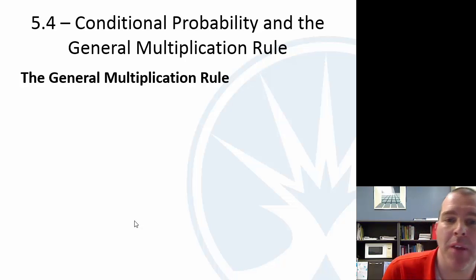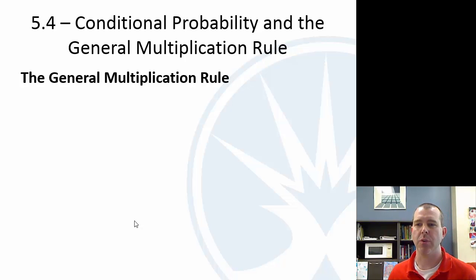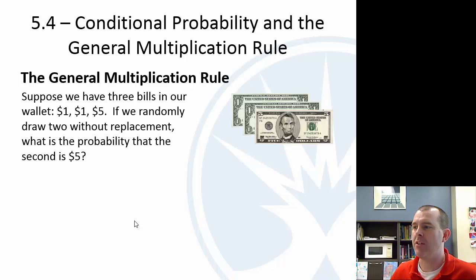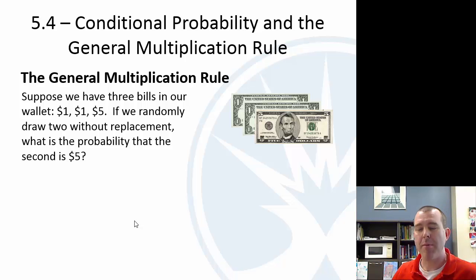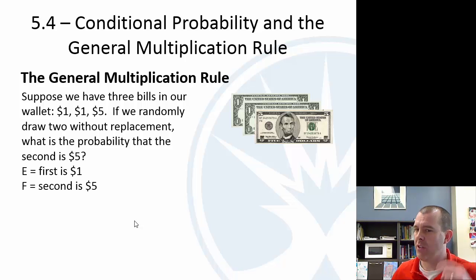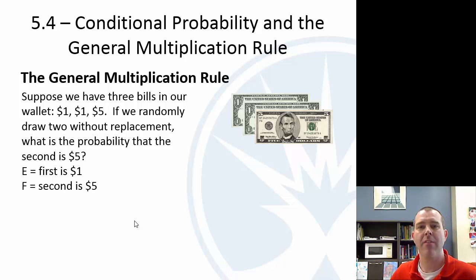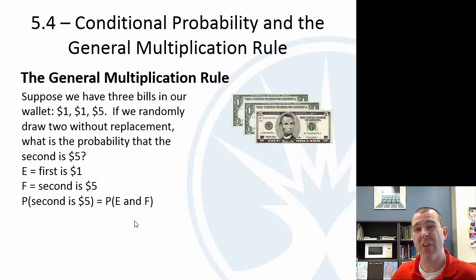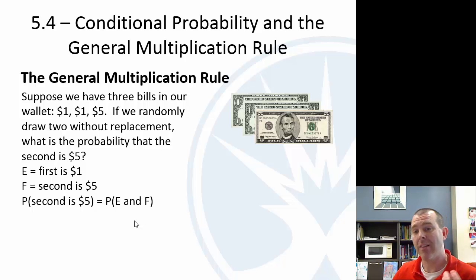Now let's use conditional probability to develop the multiplication rule. Suppose we have three bills in our wallet: two $1 bills and one $5 bill. If we randomly draw two without replacement, what is the probability that the second one drawn is a $5? We define event E as the first drawn being a $1 bill, and event F as the second being a $5 bill. We need to know something about the first draw, so we're really looking for the probability that the first is a $1 bill and that the second is a $5 bill.